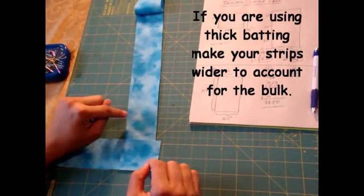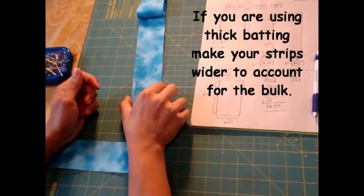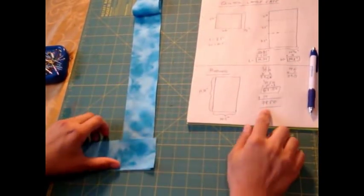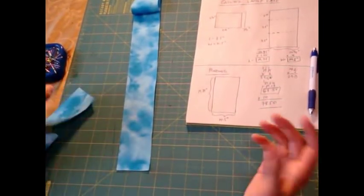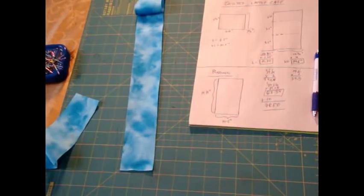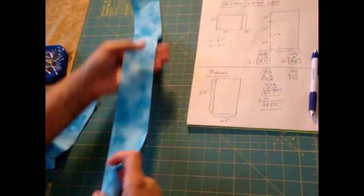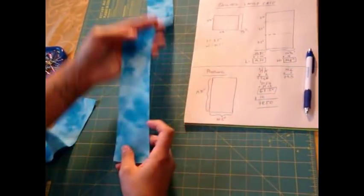My binding strips, I like to cut them at 2 and 1 quarter inch in width. Now in length, we said we needed 78 and a half inches. I don't have fabric that's that length long, so what I need to do is combine shorter strips until I get the length that I need.